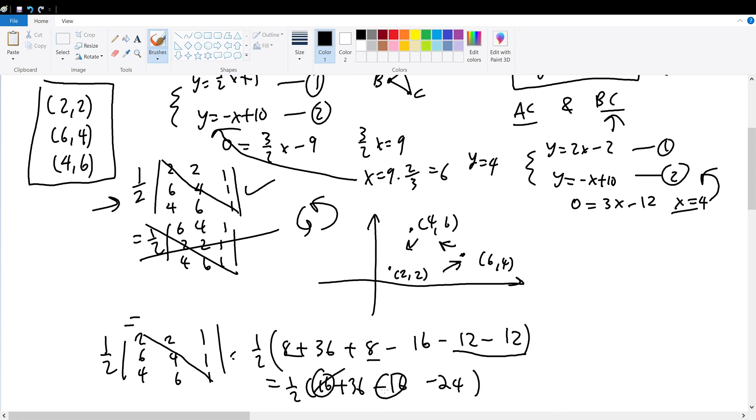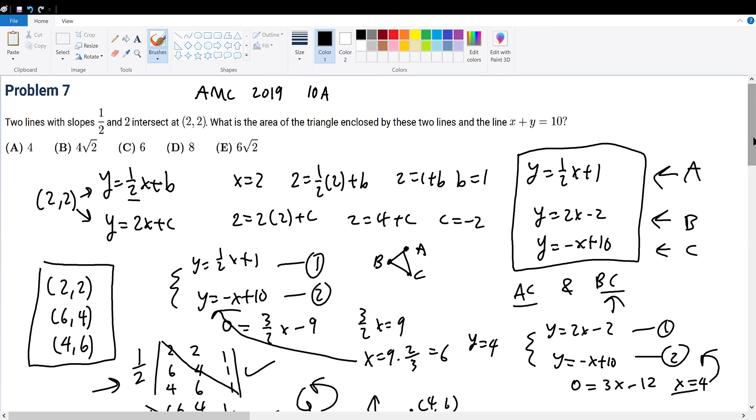Now, like terms 16 and negative 16 cancel out, so we're just left with 1/2 times 36 minus 24. 36 minus 24 is the same thing as 12, times 1/2 will give us 6. So the solution to this question will be 6. And we see here that answer choice C has 6, so the solution to this question will be answer choice C.